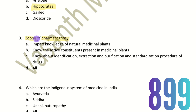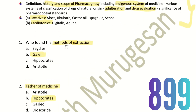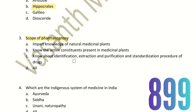Third question covers the scope of pharmacognosy. The choices include: impart knowledge of natural medicinal plants; know the active constituents present in medicinal plants; know about identification, extraction, purification, and standardization procedure of drugs. All these are pharmacognosy-related and represent the scope of pharmacognosy. Hence, the right answer is option D — all.